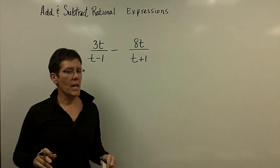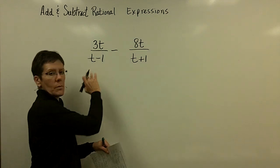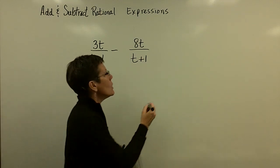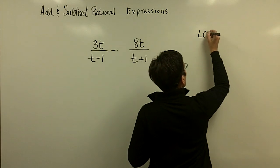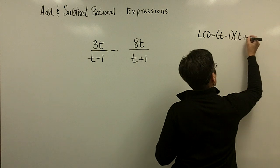So these two denominators are factored, if you will. They are 1 times t minus 1 and 1 times t plus 1. My LCD would be the t minus 1 and the t plus 1. Doesn't matter what order I write that in.